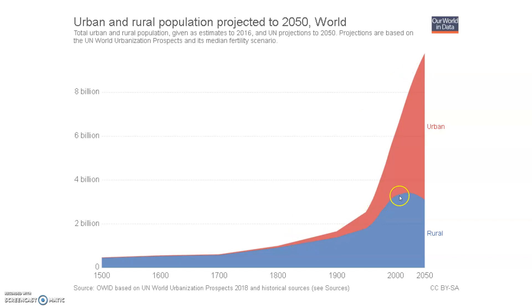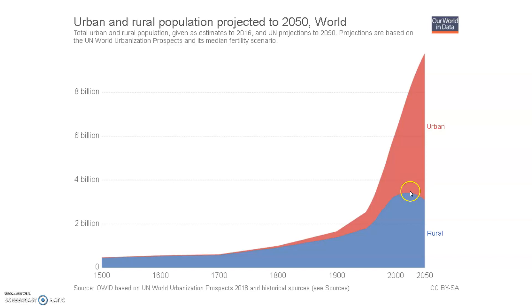Conversely, we see the rural areas decreasing, and the rural population is expected to peak around May 2025 and then begin to decline.